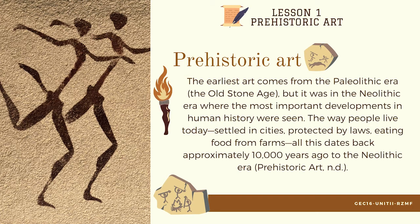The way people live today — settled in cities, protected by laws, eating food from farms — all this dates back approximately 10,000 years ago to the Neolithic era.